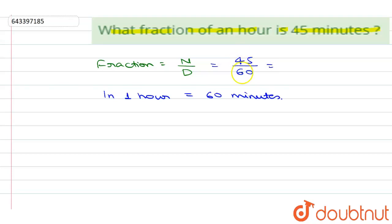If we simplify this, both numbers are divisible by 15. So 15 times 3 is 45 and 15 times 4 is 60.